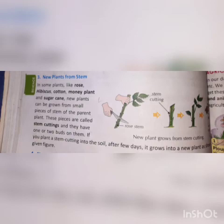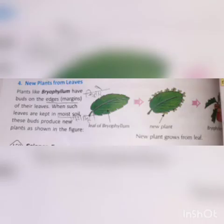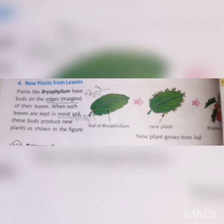Some plants like Bryophyllum have buds on the margins of their leaves. Such leaves are kept in moist soil. The buds on the leaves produce new plants, as shown in the figure.